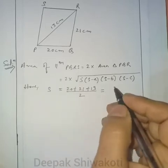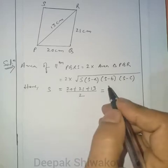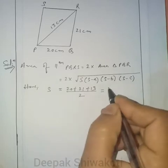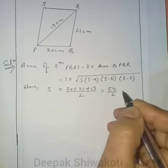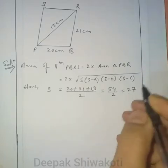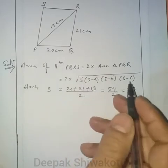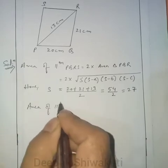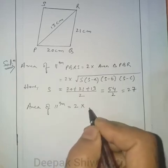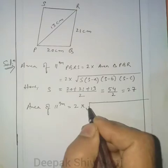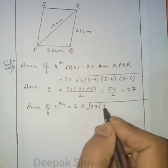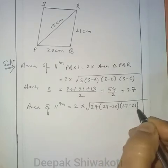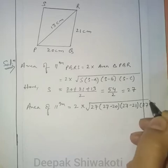S equals 54 divided by 2, which equals 27. Now putting the values of S, A, B, and C, the area of the parallelogram equals 2 into the square root of 27 × (27−20) × (27−21) × (27−13), which is 2 into the square root of 27 × 7 × 6 × 14.